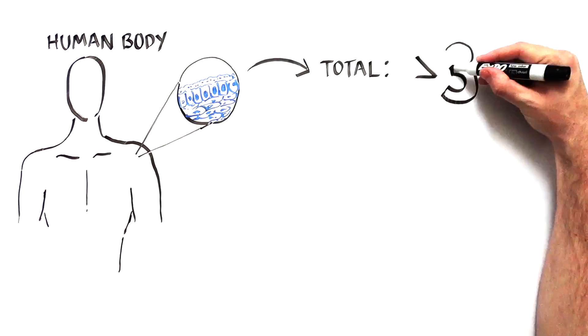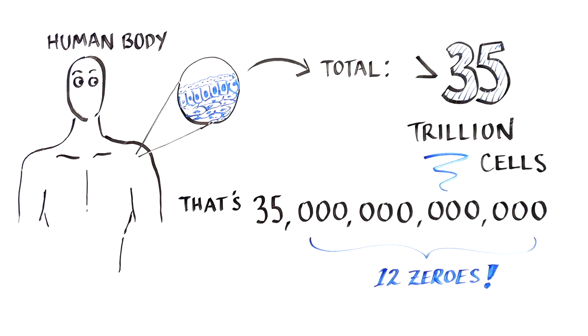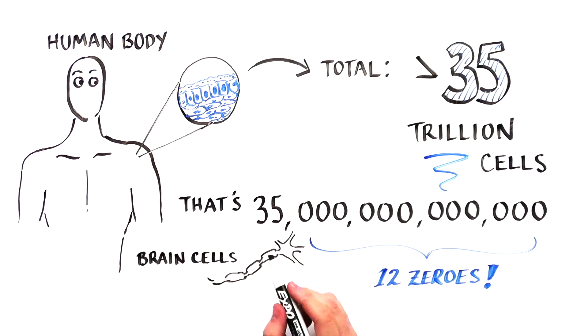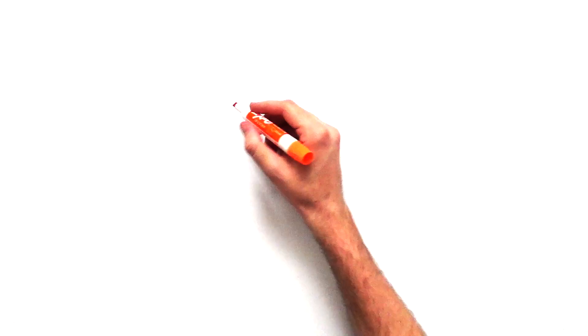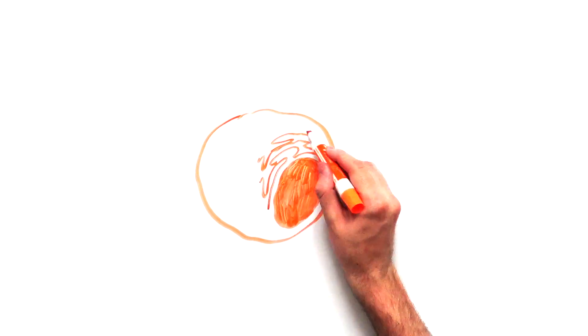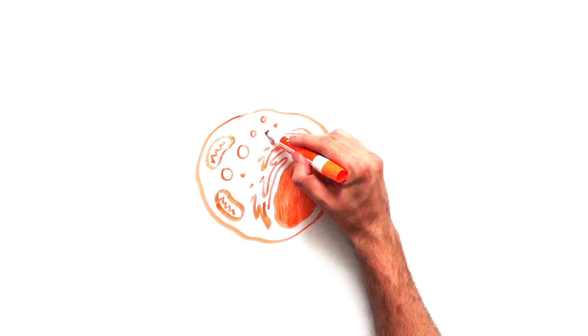We are made up of more than 35 trillion cells. They have their differences. Some are brain cells, some are skin cells, others are intestinal cells. But despite these differences, they have a common lineage since they all came from one single cell.